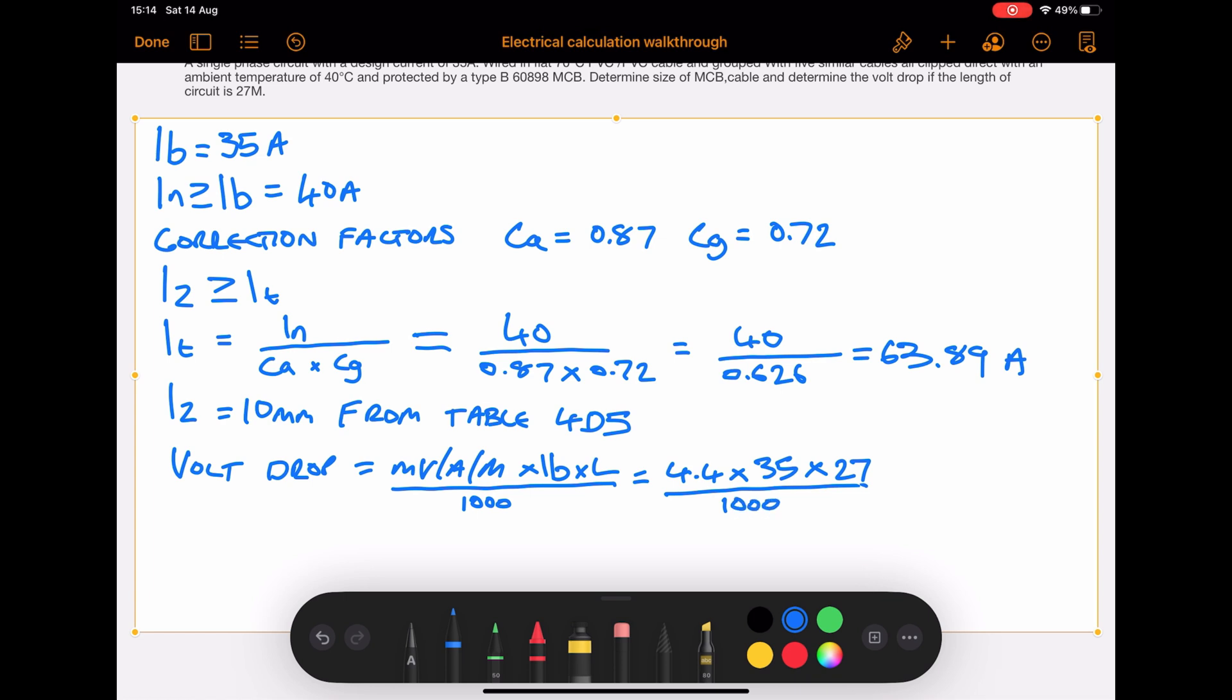We enter the values, so that's 4.4 which again comes from table 4D5, that's multiplied by 35 multiplied by 27 and then divided by 1000. So that becomes 4158 divided by 1000 which gives us the answer in volts, and that comes to 4.158 volts.